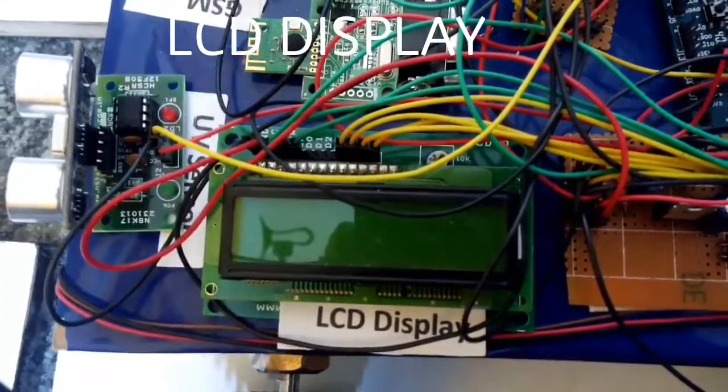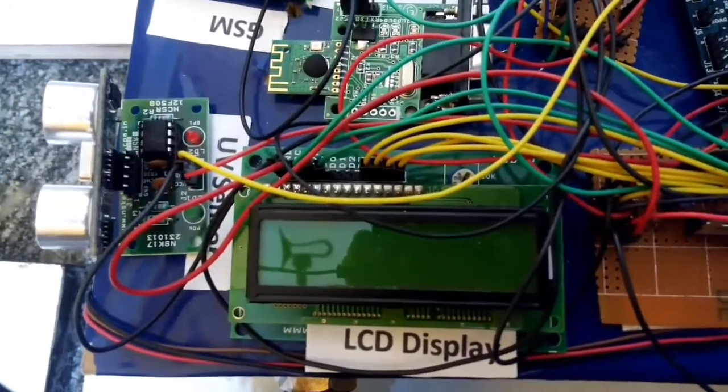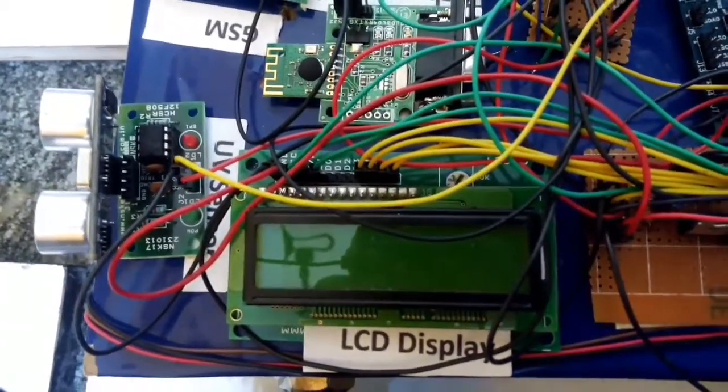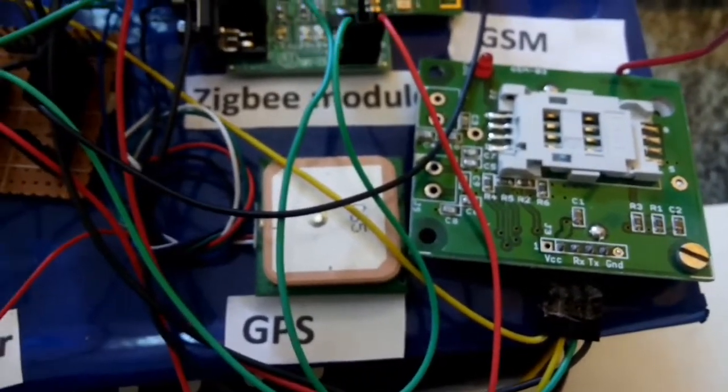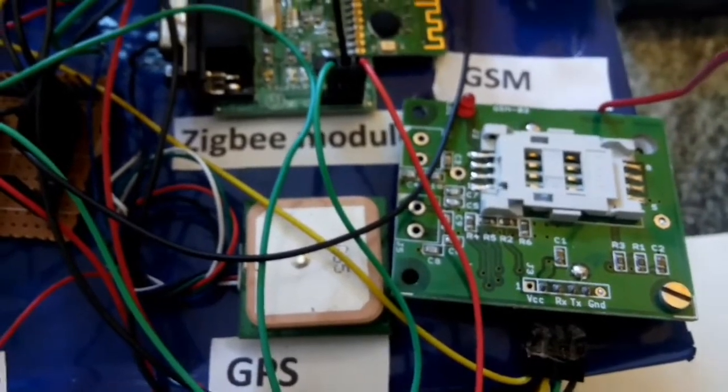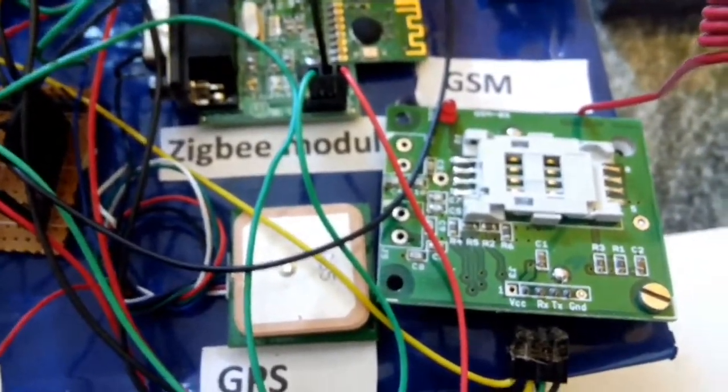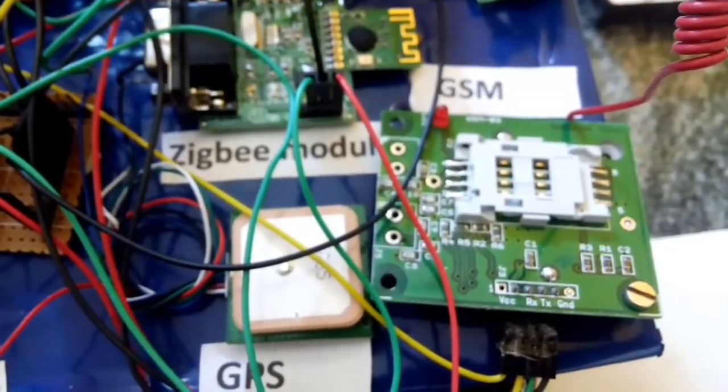LCD display is used to show either crack or object detected on the track. GPS is used in our proposed system to know exactly where the crack or obstacle is detected. It will provide the longitude and latitude of the crack or obstacle found.